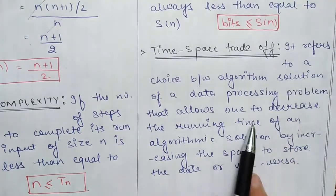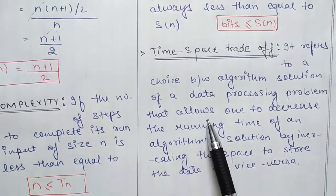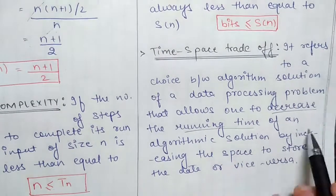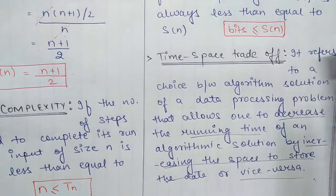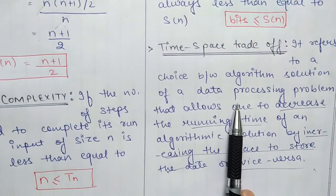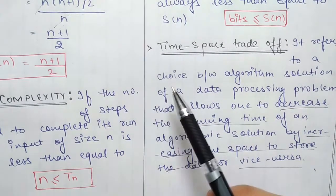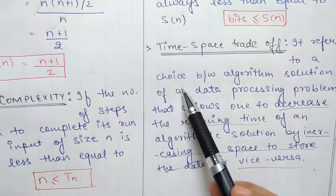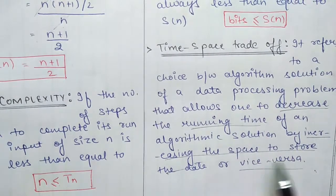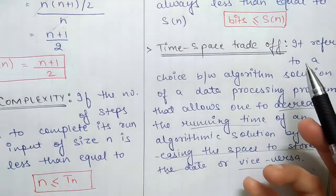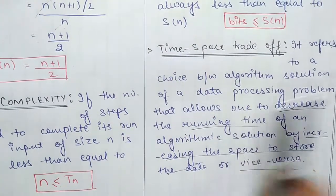Now, time and space tradeoff: it refers to a choice between algorithmic solutions to a data processing problem that allows one to decrease the running time of an algorithmic solution by increasing the space used to store data, or vice versa. In simple terms: if we want to reduce our running time, we need to increase our space. And if we want to reduce our space, we need to increase our running time.